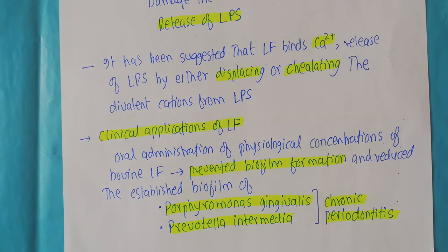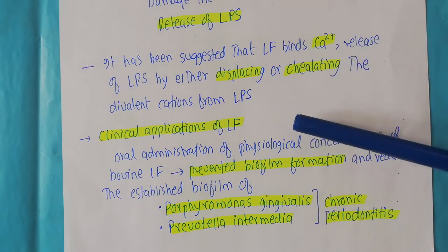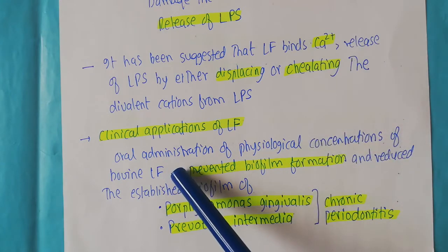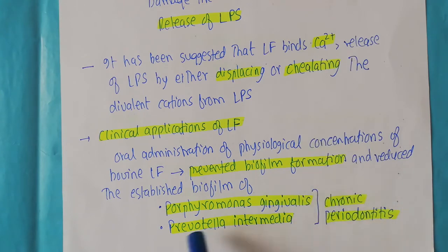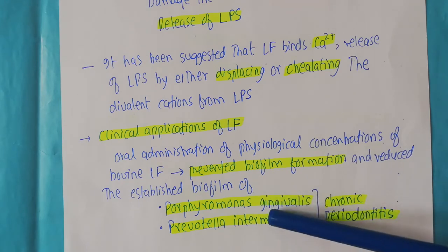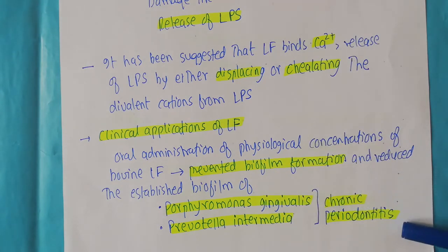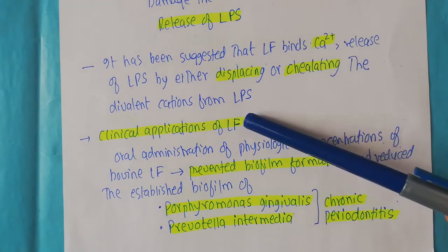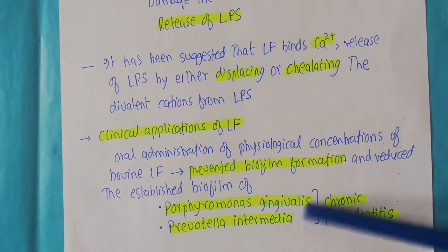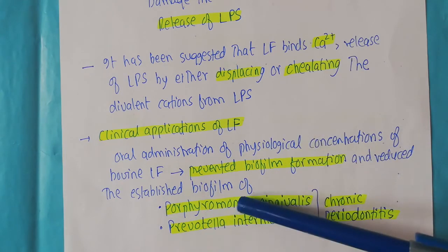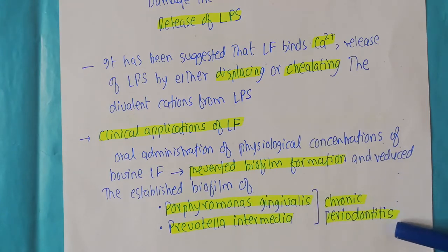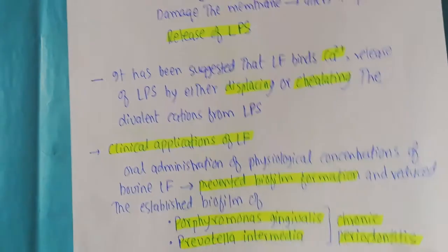Lactoferrin also has important clinical applications. One study reported that oral administration of physiological concentrations of bovine lactoferrin prevented biofilm formation by Porphyromonas gingivalis and Prevotella intermedia — important bacteria responsible for causing chronic periodontitis. When these bacteria form biofilms they cause this disease, but lactoferrin can prevent biofilm formation and also reduce already established biofilms of these two bacteria, and therefore can treat chronic periodontitis.